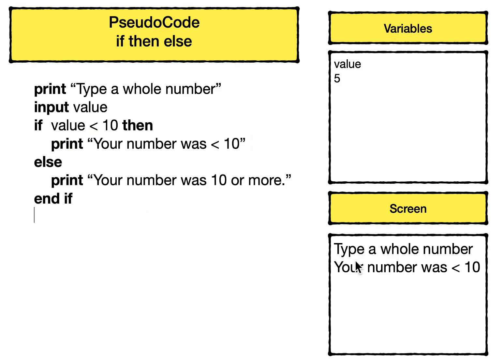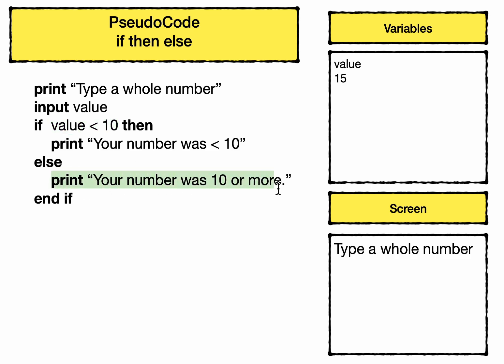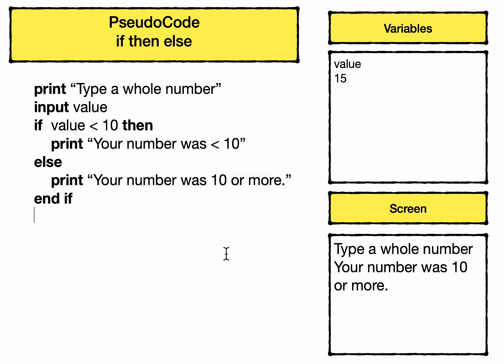Let's assume we're running the program again and this time somebody typed in fifteen, so value now has fifteen in it. When we look at the if statement, this is no longer true because value is not less than ten. So the code will jump down to the else line and only print that. The screen is different this time because the value of fifteen is actually not less than ten.